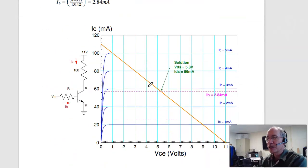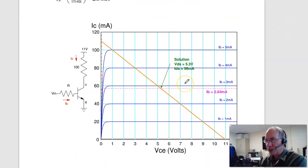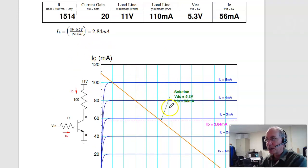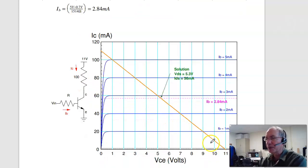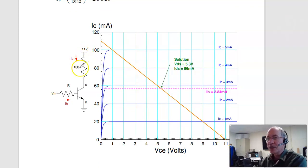Problem 6. Here is a transistor circuit. Find beta, draw the load line, and find the operating point. Beta is IC over IB. 100 over 5 is 20. 80 over 4 is 20. 60 over 3 is 20. The gain is 20. The load line, when the current is zero, I'm at 11 volts. 11 over 100 is 110 milliamps. There's the y-intercept. Connect the two, I get a straight line.